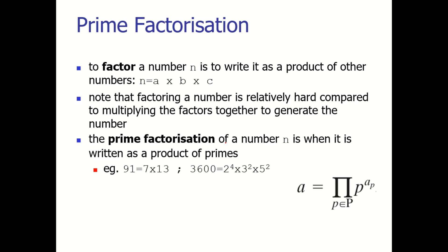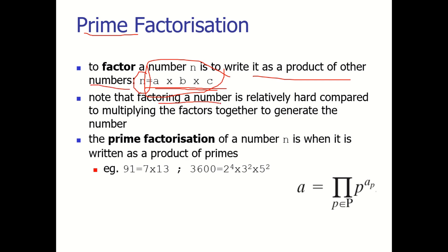Next comes prime factorization. The opposite operation — multiplying numbers together — is easy, but factorizing a given number is a difficult task. Prime factorization is especially difficult because we need to represent the number only in terms of prime factors. We have to represent N in the form of these factors, and all those factors must themselves be prime numbers.